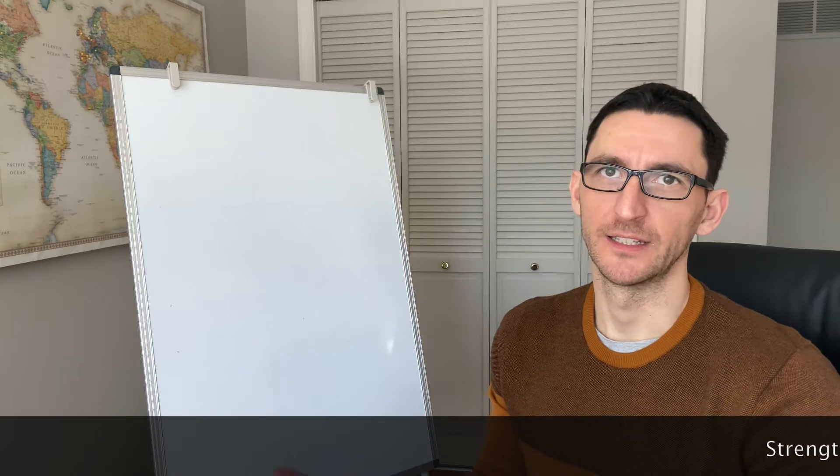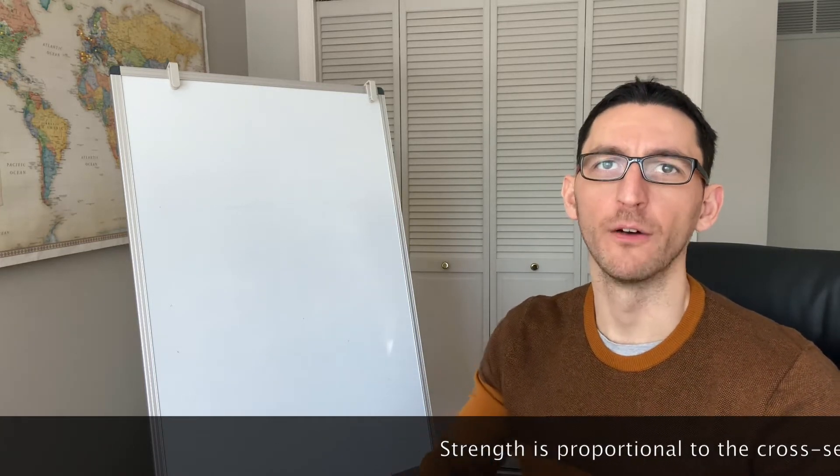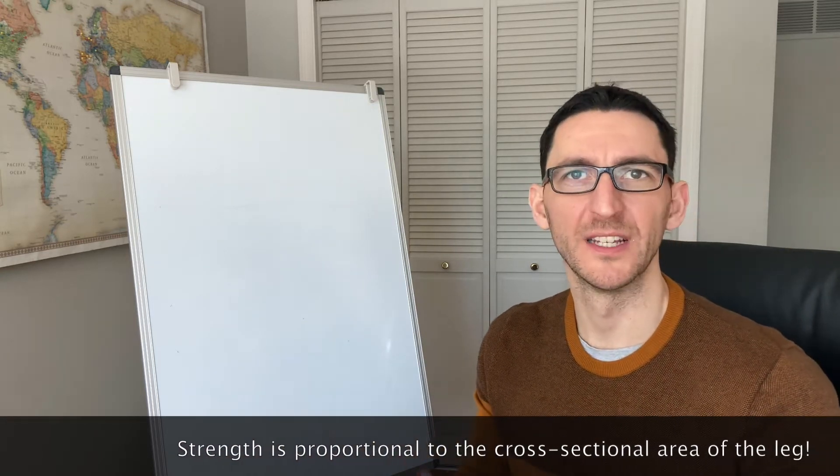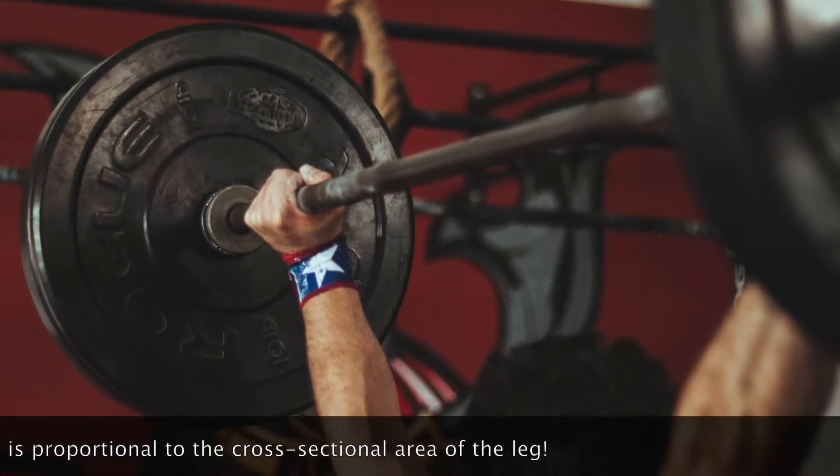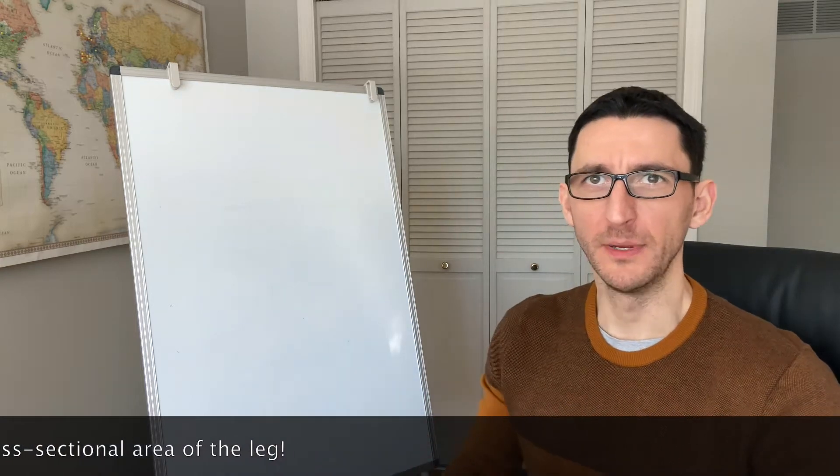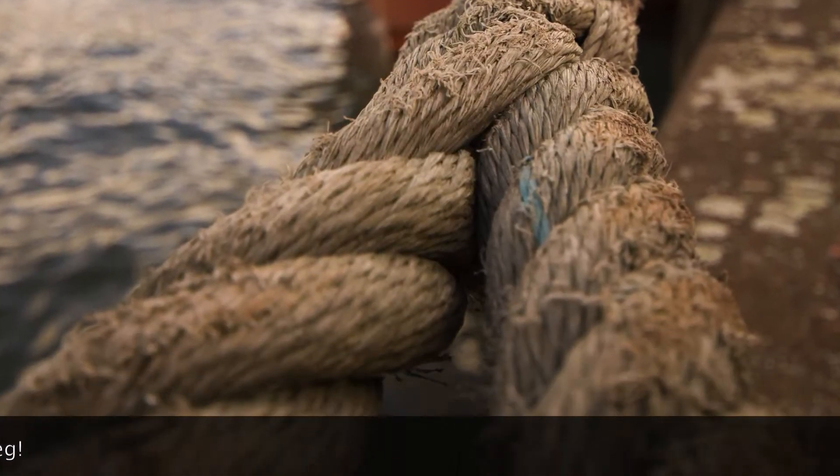First, that the strength is proportional to the cross-sectional area of the leg. This is why people who are able to lift heavy charges are also the ones with big muscles, or why bigger ropes are able to sustain heavier charges than thin ropes.